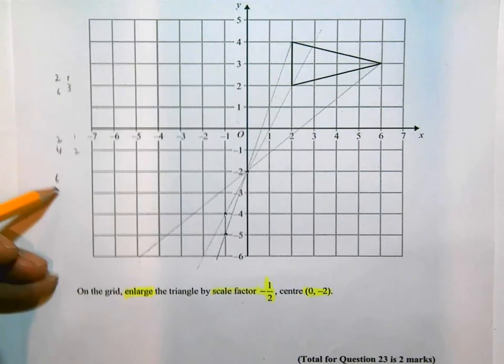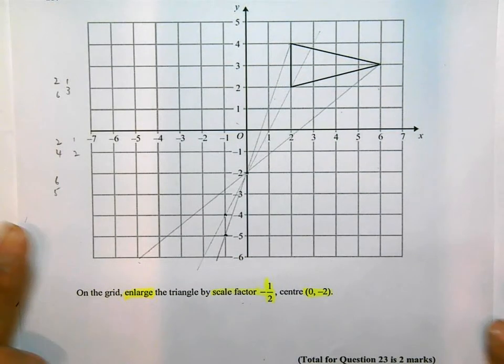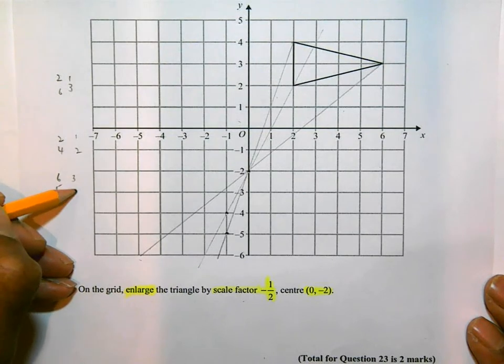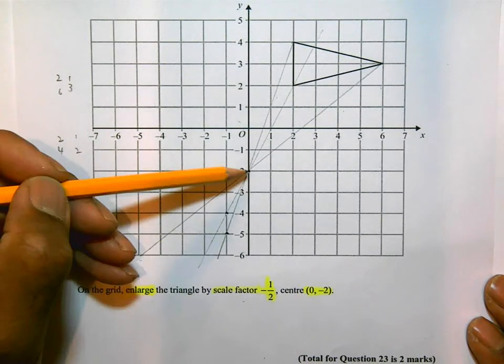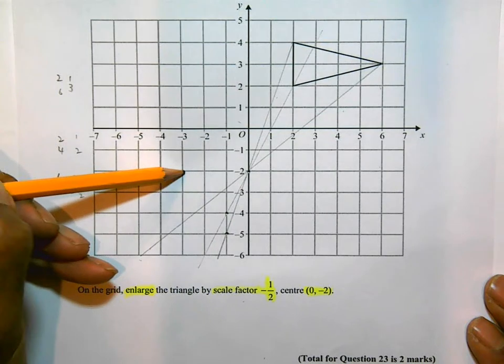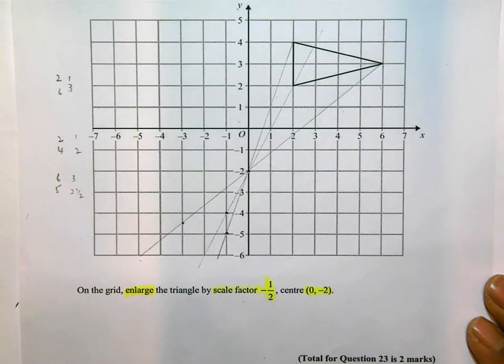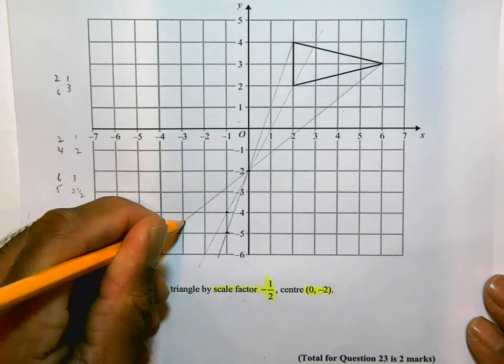Half each of those. And what does that give me? 3 and 2 and a half. So I'm going to go 1, 2, 3. And then 2 and a half. And that's why these guidelines help. They are going to tell me exactly where the points are.